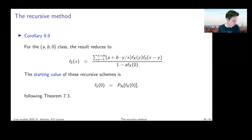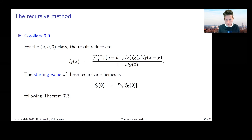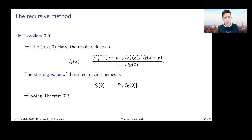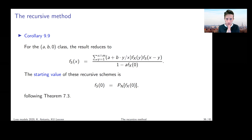Any thoughts on this? I know this is quite technical, but the picture is that we can recycle the result from Chapter 7. One of the things to think about in the remainder of today's class is how to do this discretization — if you have a continuous severity distribution on the positive real line, how can you come up with a discretized version of it.